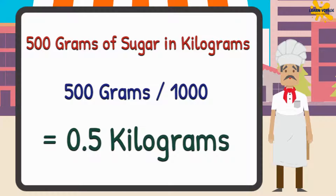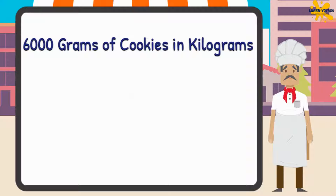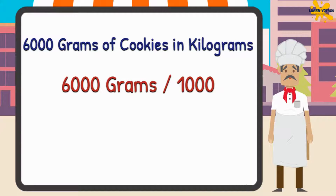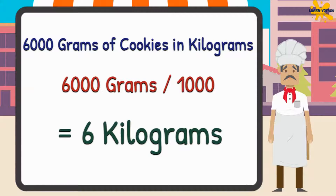Note the value is now in decimal. Now you try it. I serve 6000 grams of cookies daily. How much will it be in kilograms? Just divide 6000 grams by 1000, and you will get 6 kilograms. Exceptional if you calculated it exactly!